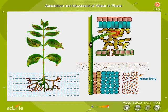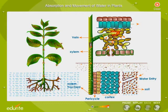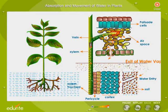The water enters the cortex of the root hairs through the soil. From the cortex it enters the xylem through the pericycle, from where the upward movement of sap takes place.